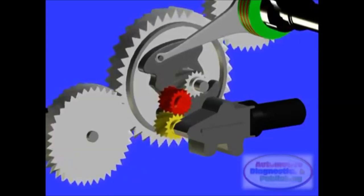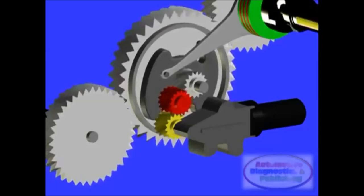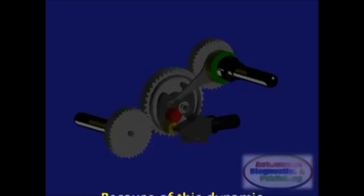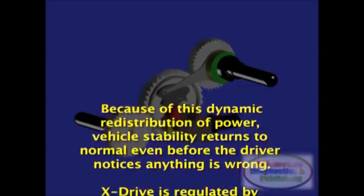X-Drive ensures that none of the drive power is wasted on the loss of traction. Every horsepower is effectively brought to focus on the road. At the first sign of understeering, drive power to the front axle is reduced. If oversteering is detected, X-Drive directs more power to the front axle.